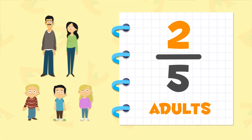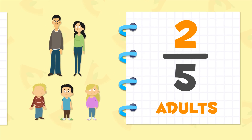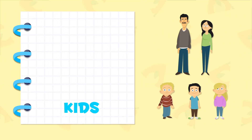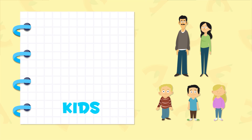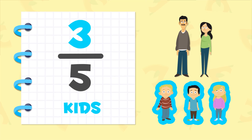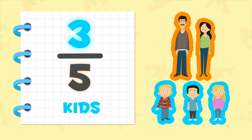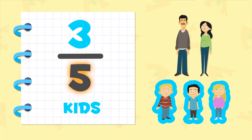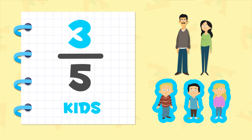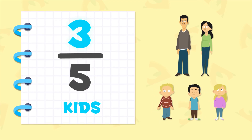So what fraction would represent the number of kids in our family? Three-fifths! In this group of five, three people are kids. Well done, Anna!